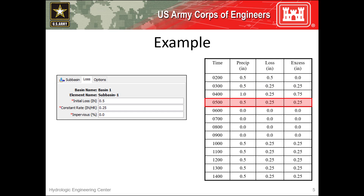In the next time step, half an inch of precipitation falls and 0.25 inches is lost due to the constant rate, resulting in 0.25 inches of excess being generated. Then there's a lull in precipitation for four hours. No infiltrated water is extracted because you can't do that with this method, so any additional precipitation is only subjected to the constant loss rate as shown in the remaining time steps.